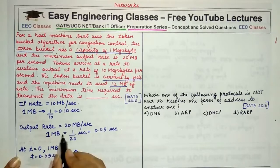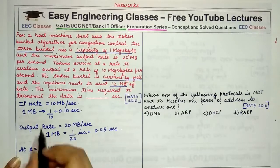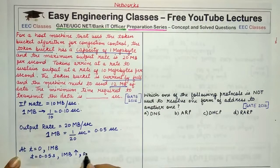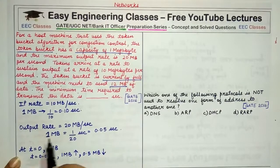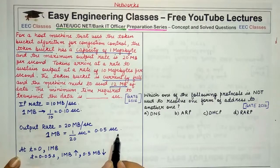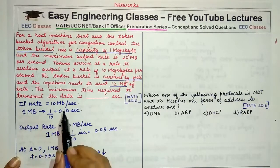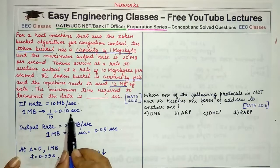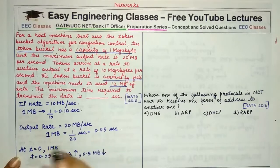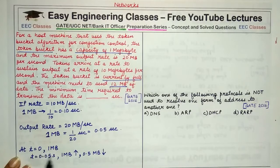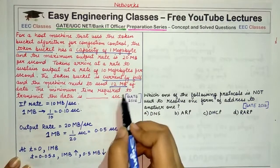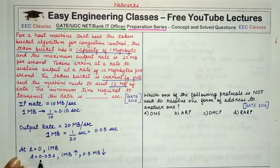1 MB of data can be moved out in 0.05 seconds. In that same 0.05 seconds, 0.5 MB of tokens will move in, because 1 MB moves in every 0.1 seconds, so in 0.05 seconds only half arrives. Initially at time 0 we had 1 MB of tokens and 12 MB of data to send. At time t equal to 0.05 seconds, we have sent out 1 MB of data and are left with 11 MB. The bucket now has 0.5 MB of tokens.